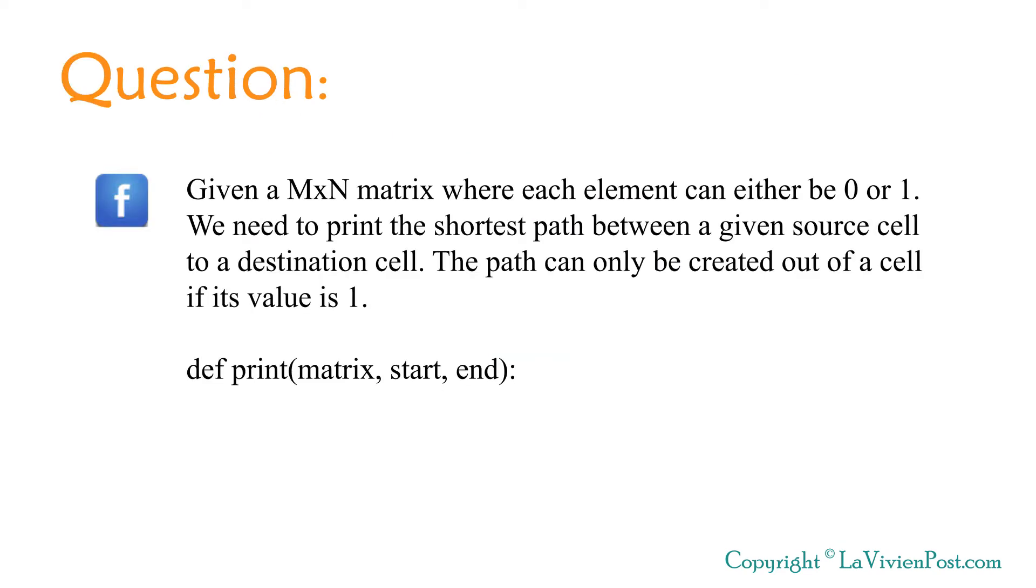This is a question statement. Given an m x n matrix where each element can either be 0 or 1, we need to print the shortest path between a given source cell to a destination cell. The path can only be created out of a cell if its value is 1.